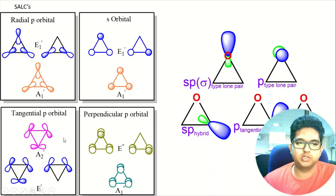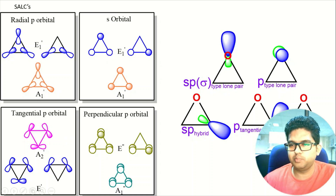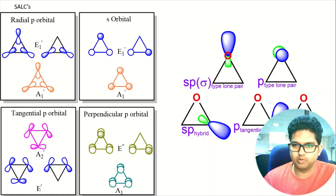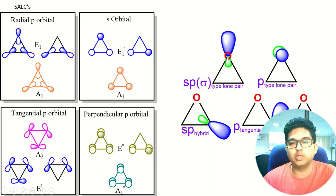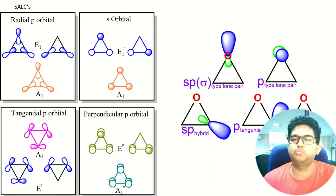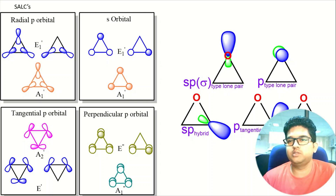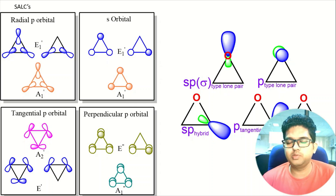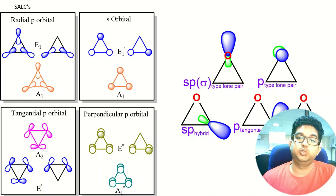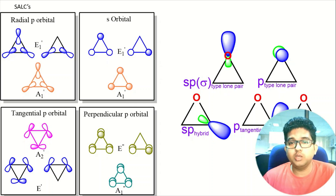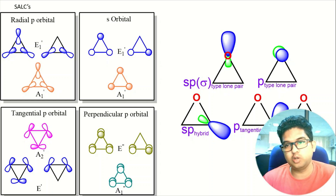This is the SP type lone pair of oxygen. Generally, oxygen has two types of lone pairs: one is an SP type and another is a pure P type lone pair. In group theory, we generally consider lone pairs to be similar and don't discriminate between their types. But both lone pairs are actually of different types. Even in H2O, one lone pair is SP type and another is fully P type. There is a difference between them.